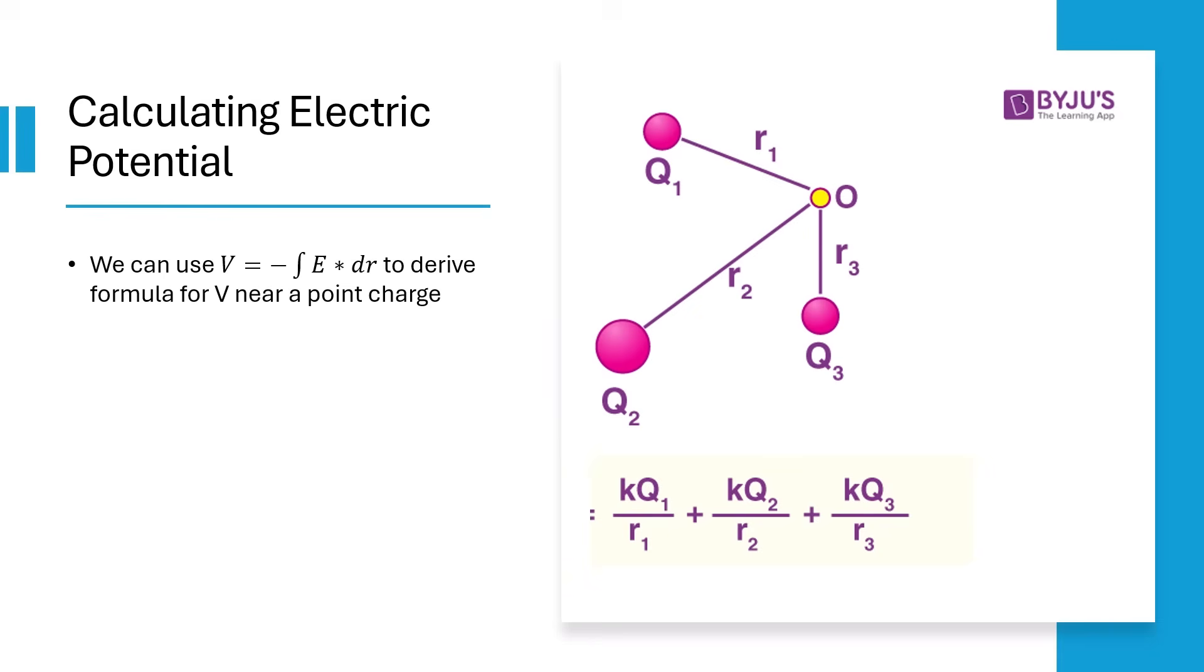This formula is pretty helpful because it allows us to derive formulas for V. Near a point charge, V equals KQ over R. And just like when we were calculating E-field strength, if we have more than a single point charge, we use a sum or an integral.